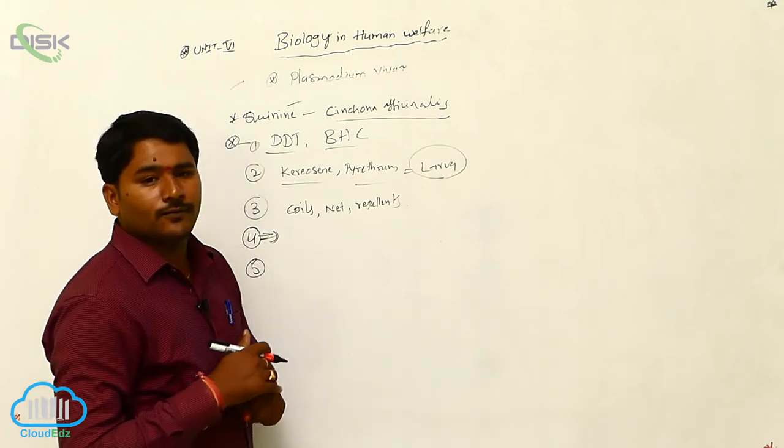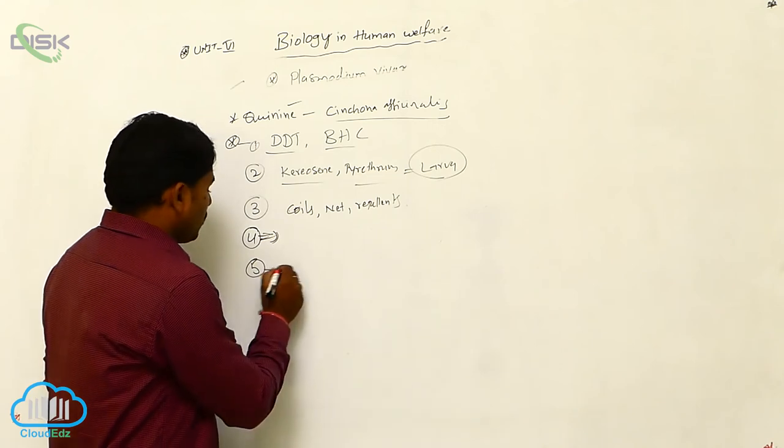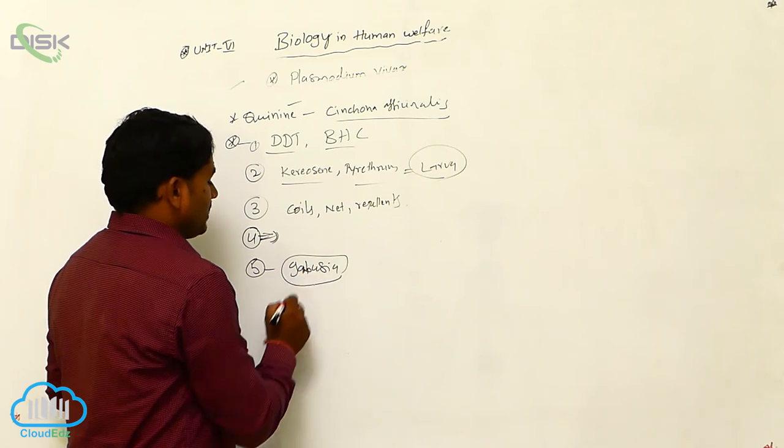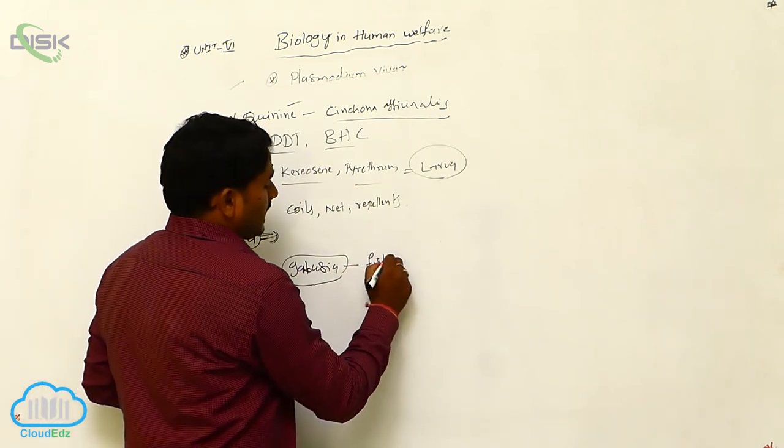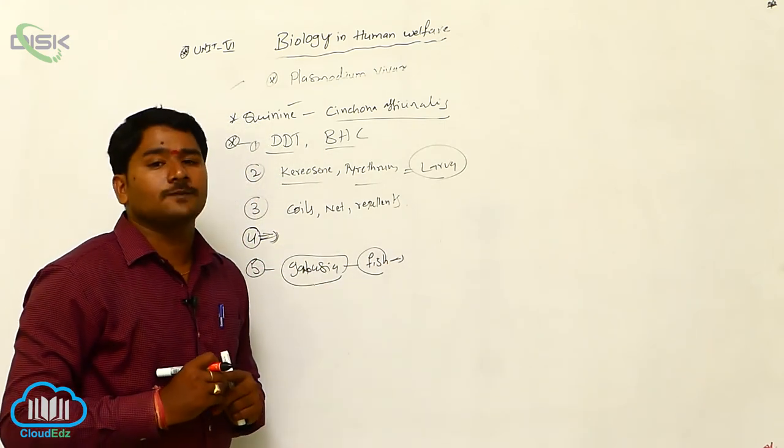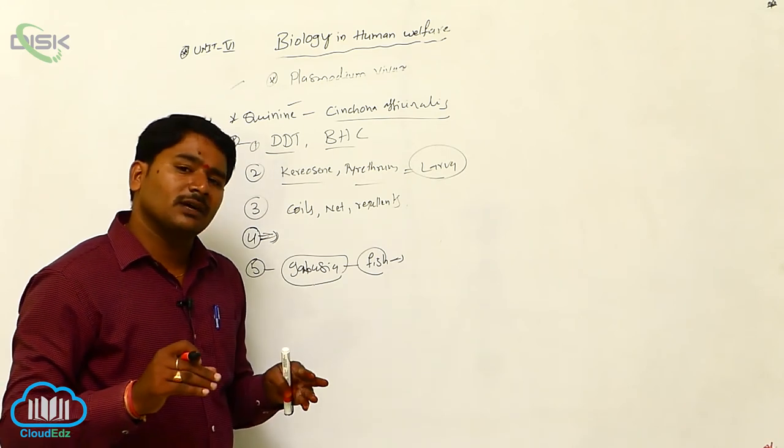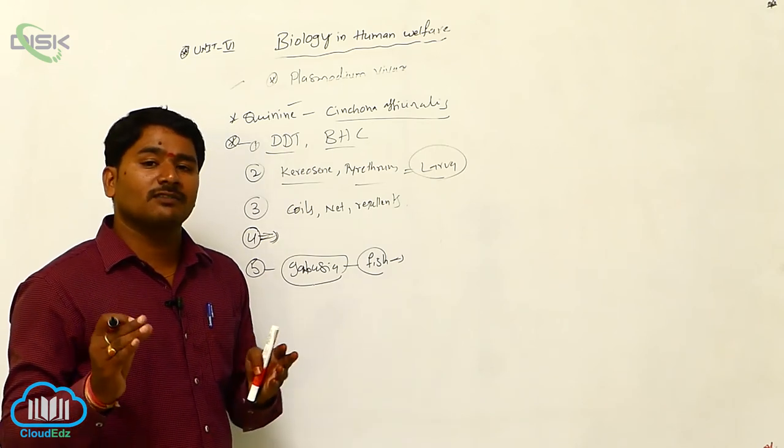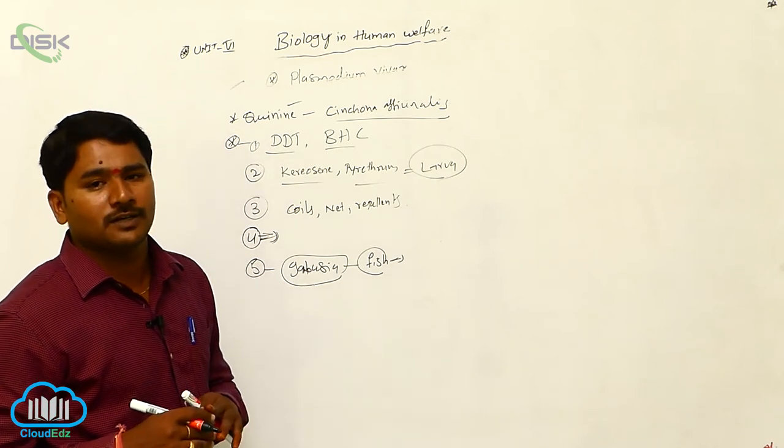Biological control of mosquitoes and larvae. If we grow Gambusia fish, Gambusia is a larvivorous fish. In stagnated water, in drainages, if you grow Gambusia, Gambusia will eat the larval stages of mosquito, Anopheles mosquito. Then we can control the population of mosquitoes.